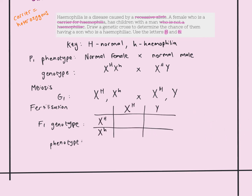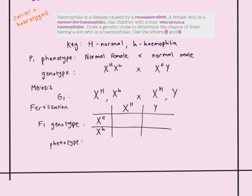When we do the genetic cross, we keep the X's at the front. The first child is X superscript H, X superscript H — homozygous dominant. The second child gets X superscript H from dad and X superscript h from mum — a daughter who is a carrier. The third child gets X superscript H and Y — a son with a normal allele. The fourth child gets X superscript h and Y — a hemophiliac son.